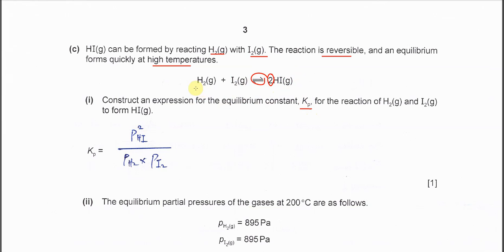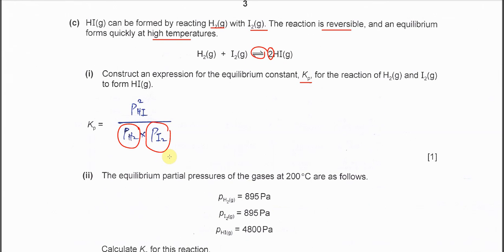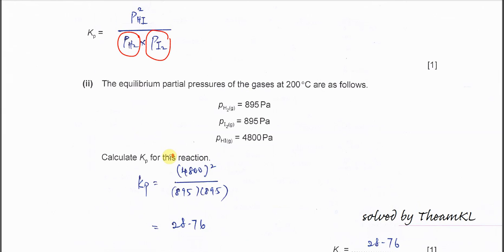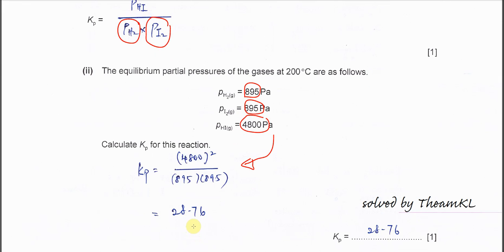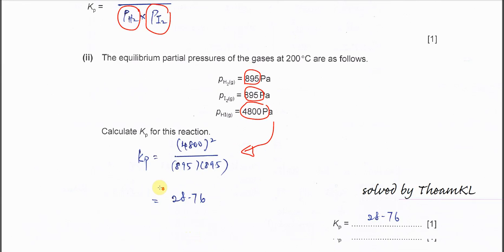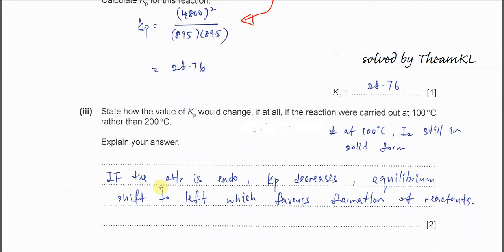Over the reactant, partial pressure of H2 times partial pressure of I2. Given the partial pressures of reactant and product, it's quite easy. You substitute all these partial pressures into the expression and you'll get 28.76. So this Kp is dimensionless, no unit. All cancel out.